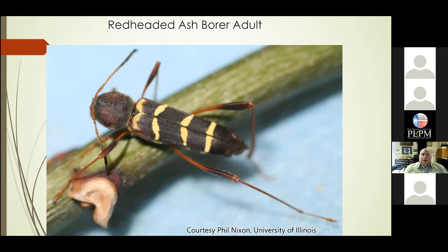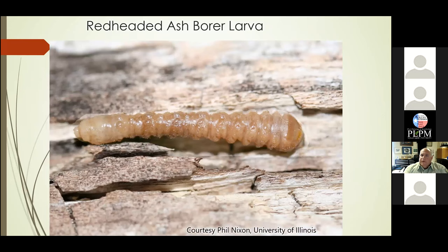Another common pest across Texas in ash trees and other hosts is the red-headed ash borer. Its adults are pretty easy to identify — they're kind of red-legged with really prominent yellow stripes on their black elytra, very easy to distinguish from anything else we have. Its larvae are round-headed wood borers, not flat-headed, and we do not see that bell-shaped larval segmentation.